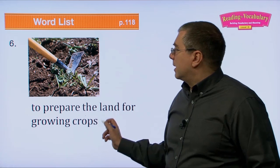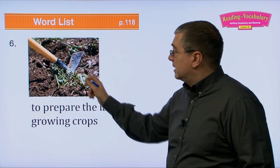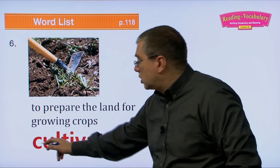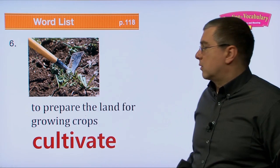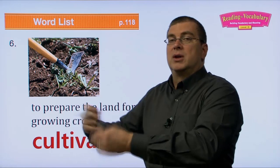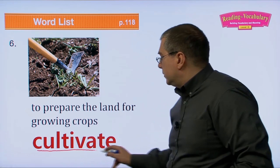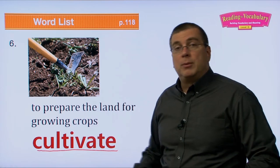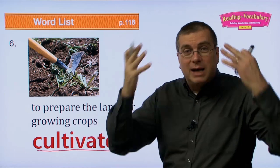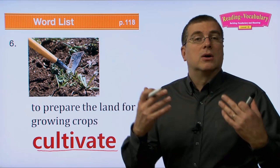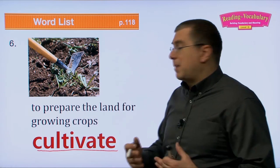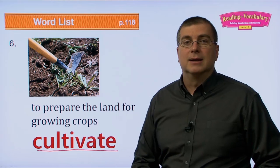Number six: to prepare the land for growing crops — that's to cultivate. Farming is hard work. You have to cultivate the soil. On a big farm, machines turn up the land to cultivate the field, making it ready to sow. But cultivate isn't just for farming — when you study, you're cultivating your mind, preparing it for later in life. Parents can cultivate their children. It just means preparing something for something else.